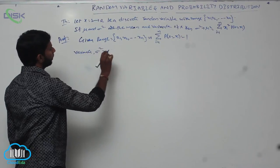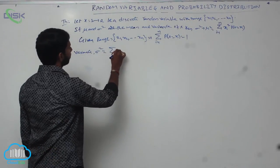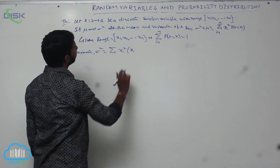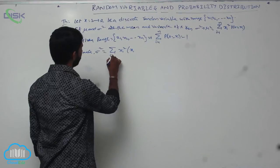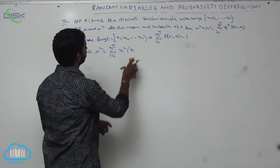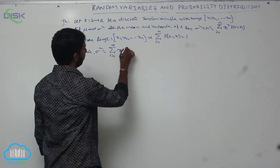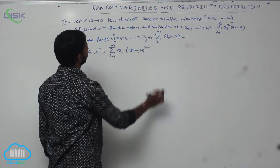The variance, sigma squared, equals the sum from i equals 1 to n of (xi minus mu) squared times P(X = xi).